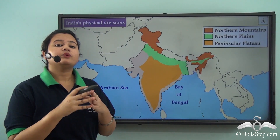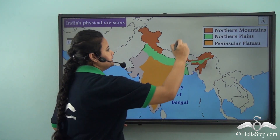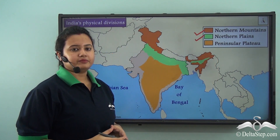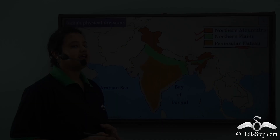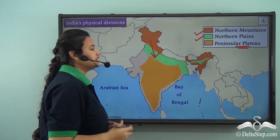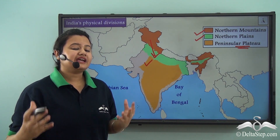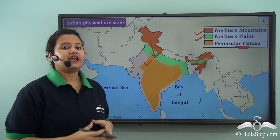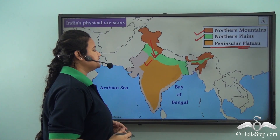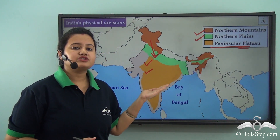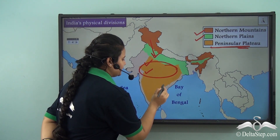In our previous two lessons, we focused on the two major physical divisions of India: the northern mountains and the northern plains. Plateau is also another important physical division of India. As one moves down the northern plains and crosses the Indo-Gangetic Plain, they enter a highly rugged terrain slightly elevated above its surroundings — this region is known as the Peninsular Plateau. On the map, the region marked in yellow represents the Peninsular Plateau, which covers the central and southern part of India.